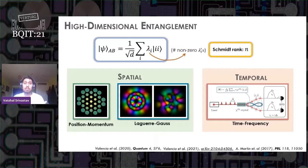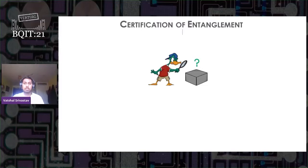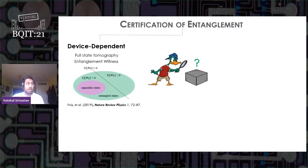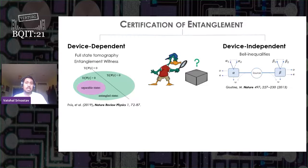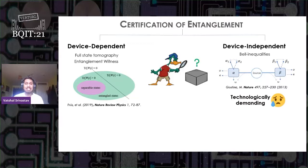Now entanglement is a key enabler in quantum communications and computing, which is why it is crucial to certify its presence on the system of interest. Usually it is done in two trust variant ways. First is device dependent, where both parties Alice and Bob are trusted. Some of the examples are full state tomography and entanglement witness. Second is device independent ways, where both parties are untrusted and entanglement is detected by violating Bell type inequalities. However, the entanglement certification through device independent ways are technologically demanding.